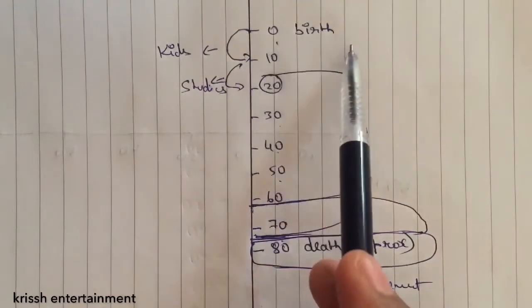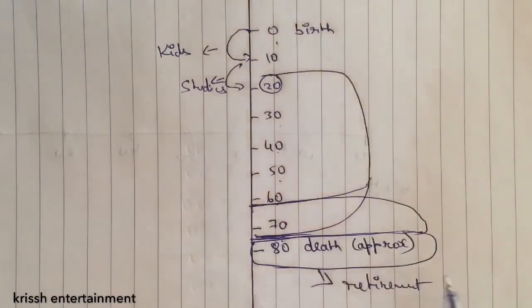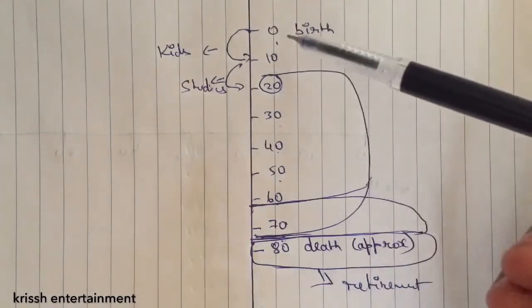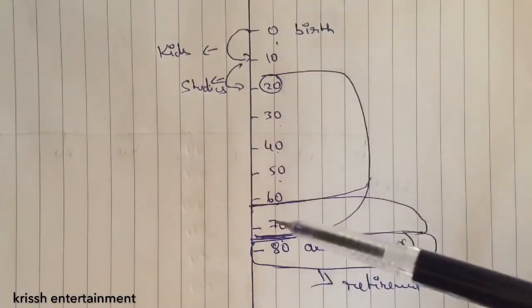Let's see, 0 is your birth and 80 is your death approximately. Of course nobody knows our death date or time. Now you're in the stage of 0 to 10. You can observe that there is exactly 10 years of gap in each stage.